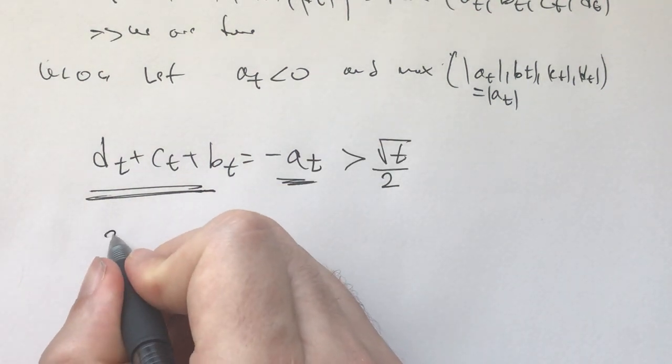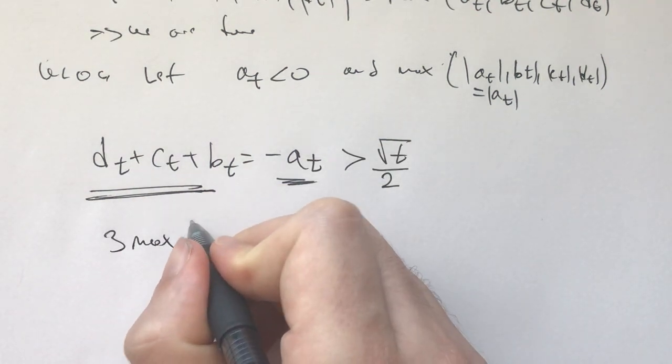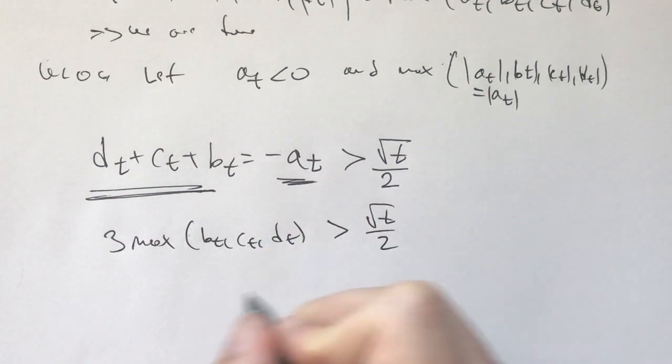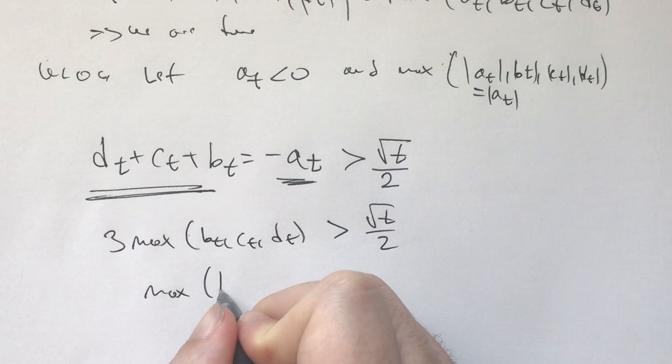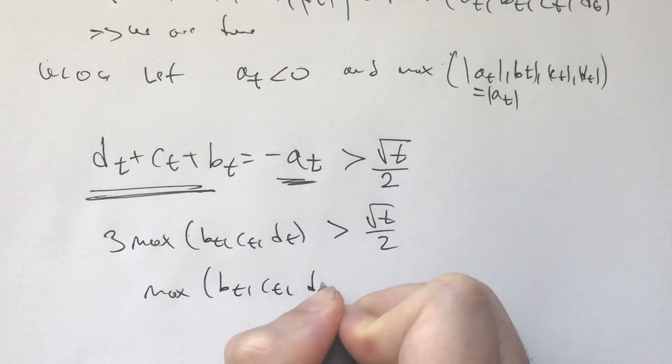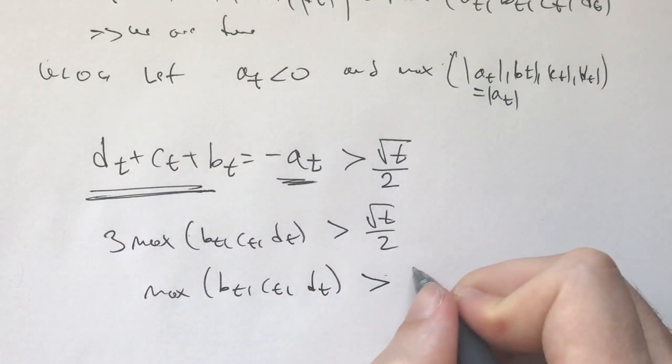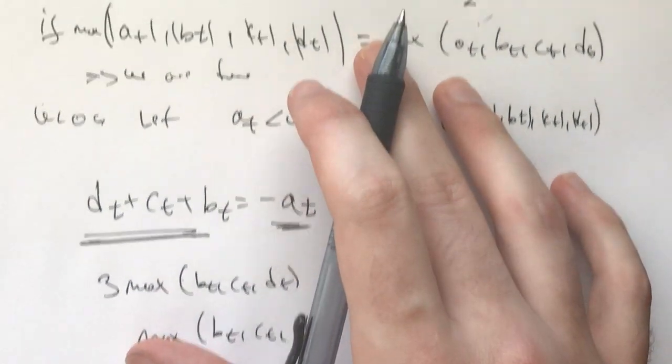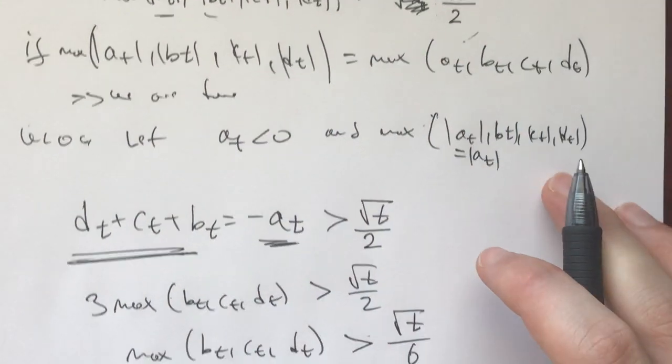And now we know that the biggest one of these is what? We know that 3 times that biggest one of bt, ct, dt is going to be greater than the square root of t over 2, which means that the maximum among bt, ct, dt is going to be greater than the square root of t over 6. And now, no matter the n, we just need to pick, say, let t be equal to n squared times 36, to make sure this is the case.